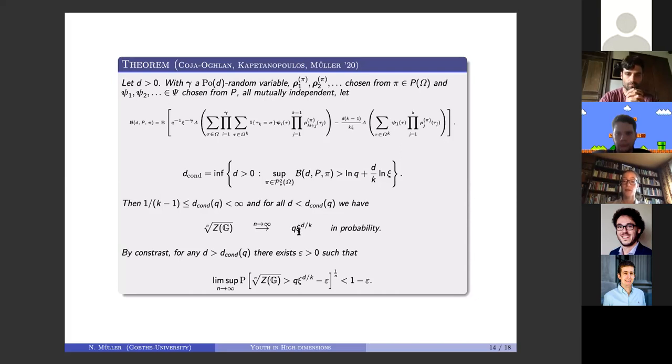If you had no constraints, the number of solutions would be q to the n—for each vertex you have q spins. This xi factor is the average impact of a constraint, so for each constraint you get a penalty factor.